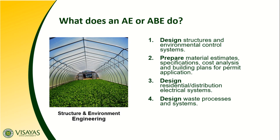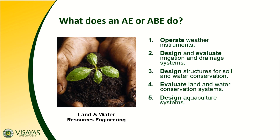For Structure and Environmental Engineering, the roles include designing structures and environmental control systems — from design down to material estimates, specifications, cost analysis, and building plans for permit application — as well as designing residential electrical systems and designing waste processes and systems. For Land and Water Resources Engineering, the roles include: operate weather instruments; design and evaluate irrigation and drainage systems; design structures for soil and water conservation; evaluate land and water conservation systems; and design aquaculture systems.